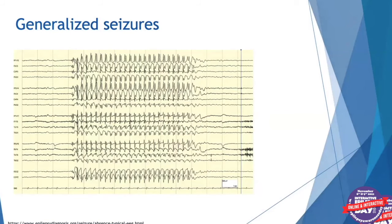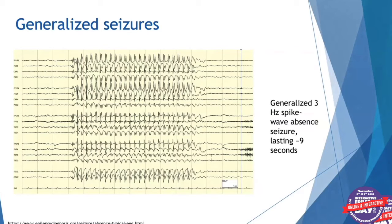Sometimes on EEGs we can see seizures, depending on how frequently they are occurring — usually on longer studies, particularly if we wean medications. This is an example of a generalized absence seizure, which can sometimes be triggered by hyperventilation or blowing on the pinwheel. It characteristically has rhythmic activity seen in every lead at about three to three-and-a-half hertz — a generalized three hertz spike and wave absence seizure lasting about nine seconds. Typically, children will stop blowing the pinwheel, stare off, and be unresponsive for the duration, then return to what they were doing. Children can have these types of seizures hundreds of times a day before they're recognized.